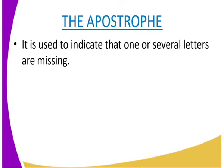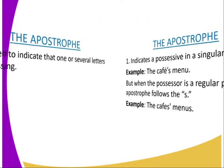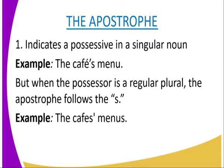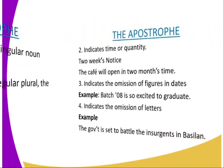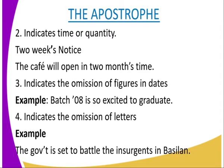Now let us look at the apostrophe. It is used to indicate that one or several letters are missing. The apostrophe indicates a possessive in a singular noun — example: the café's menu. But when the possessor is a regular plural, the apostrophe follows the S: the cafés' menu. We can also say the apostrophe indicates time or quantity — for example: two weeks' notice, or the office will be open in two months' time.